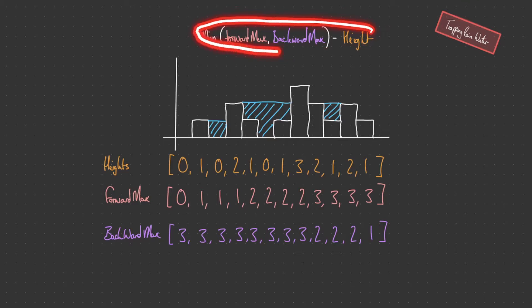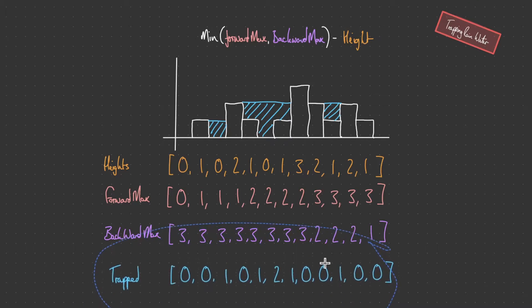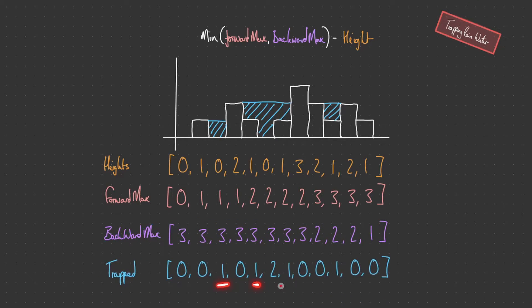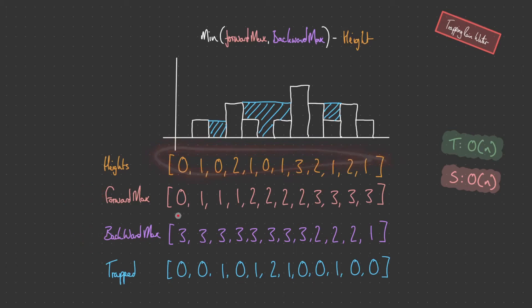This gives us the formula: minimum(forward_max, backward_max) minus height at that position. We carry out this calculation iterating through the array once more and sum up the values. Visually, after being carried out, adding up all those values gives us six — which is the correct answer: one, two, three, four, five, and six. This first solution runs in linear time and space, since we have a forward max array and a backward max array, each the same length as height — that's 2n, reducible to O(n) space.